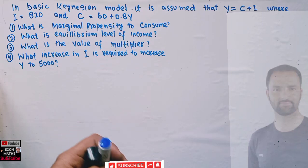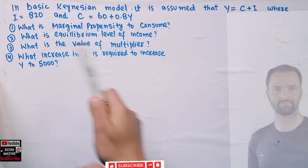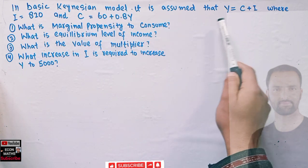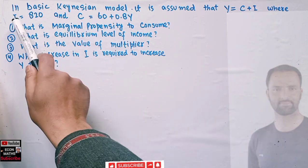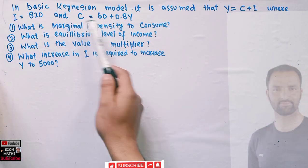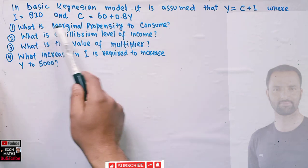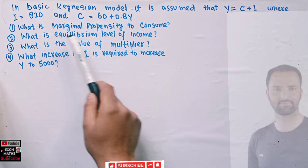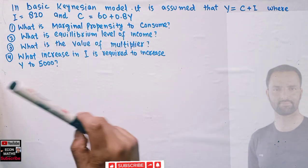In this video we will try to solve a problem on a basic Keynesian model. In the basic Keynesian model it is assumed that income equals consumption plus investment, where investment is 820 and the consumption function is given by C = 60 + 0.8Y. We have to find the marginal propensity to consume, the equilibrium level of income, and the value of the multiplier.